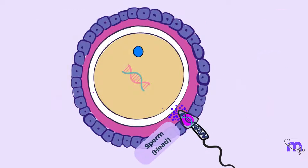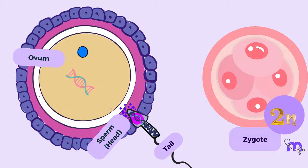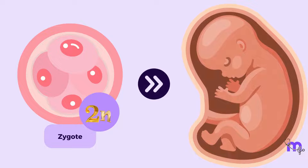The sperm's head, containing its genetic material, enters the egg, while the tail and other structures are left behind. This marks the formation of a zygote — a single-cell structure that now carries the complete set of genetic instructions for the potential development of a new individual.